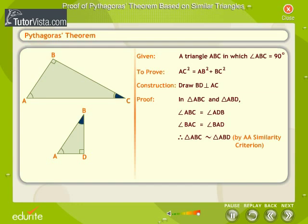It follows that angle ACB is equal to angle ABD. The side corresponding to angle ACB is AB, and the side corresponding to angle ABD is AD. The side corresponding to angle ABC is AC, and the side corresponding to angle ADB is AB. The corresponding sides of similar triangles are proportional. Therefore, AB over AD equals AC over AB. By cross multiplication, AB squared equals AC into AD. — Equation 2.